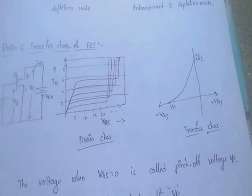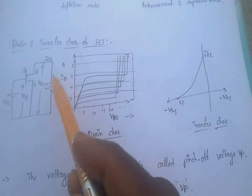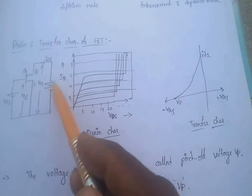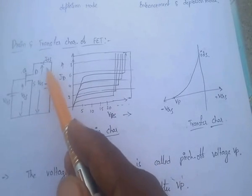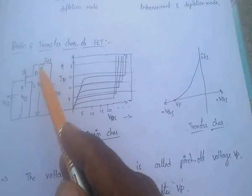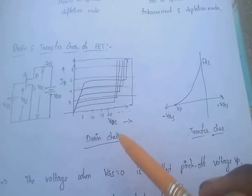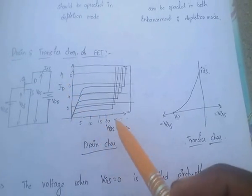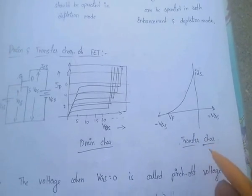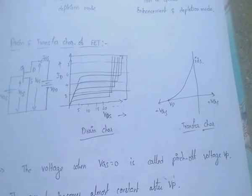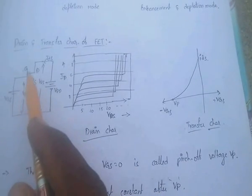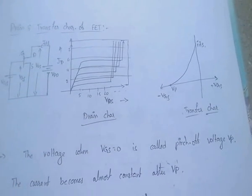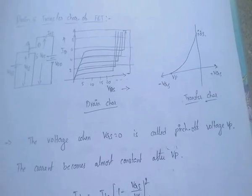Coming to the Drain and Transfer Characteristics of FET: the input supply is VGS and the output is VDS. IDS is the drain current. The drain characteristics show the relationship between VDS and ID. In the transfer characteristics, when VGS equals zero, the voltage at which current becomes nearly constant is called the pinch-off voltage.